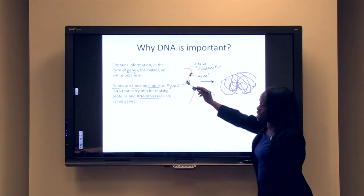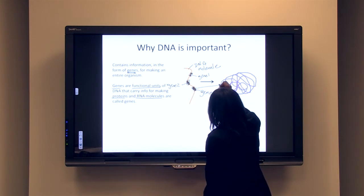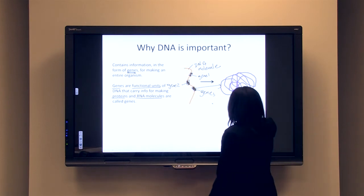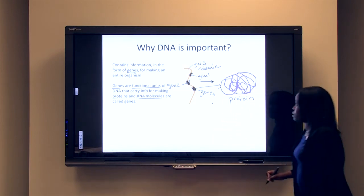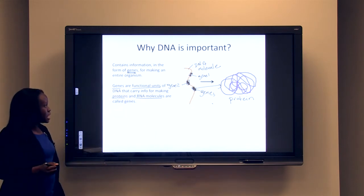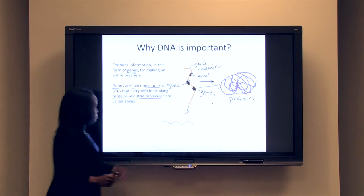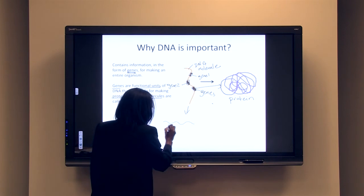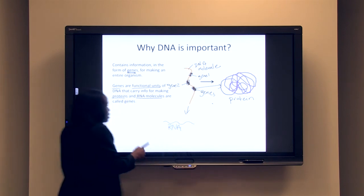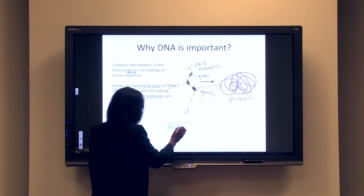And this gene is going to have the information that makes this molecule, which is a protein. This is actually going to make this protein molecule. That's one of the reasons why DNA is important. One of the major reasons is that DNA actually makes protein. DNA can also make functional RNA molecules, and I'm just going to draw this picture to depict an RNA molecule.